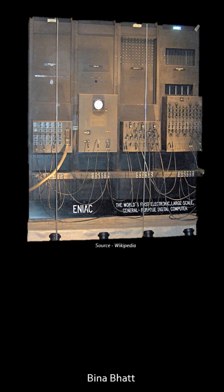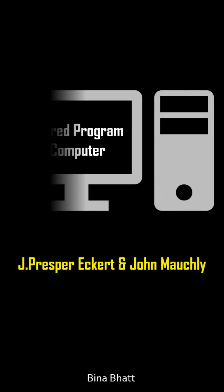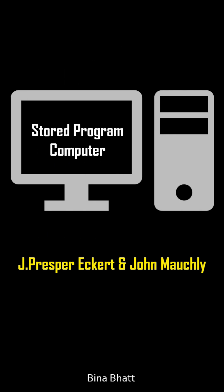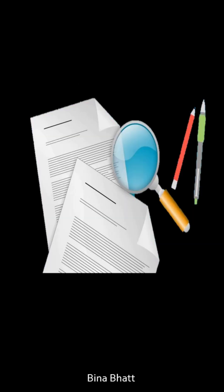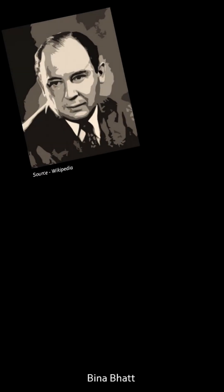During World War II, while working on the top-secret ENIAC project, J. Presper Eckert and John Mauchly came up with the idea of a stored-program computer, or EDVAC. Due to wartime secrecy, they couldn't publish their insights immediately. Interestingly, John von Neumann, who wasn't part of the ENIAC's core team, didn't have any such restrictions.